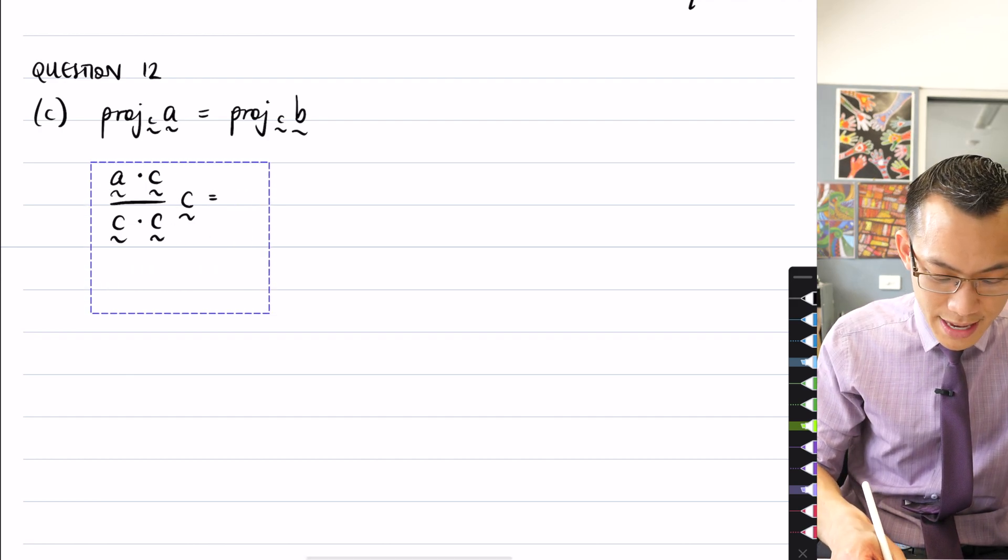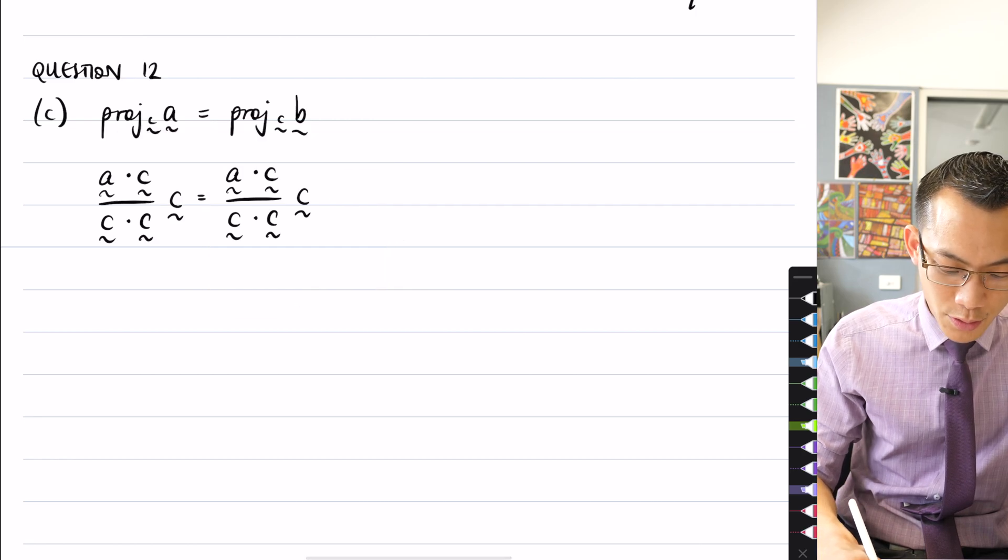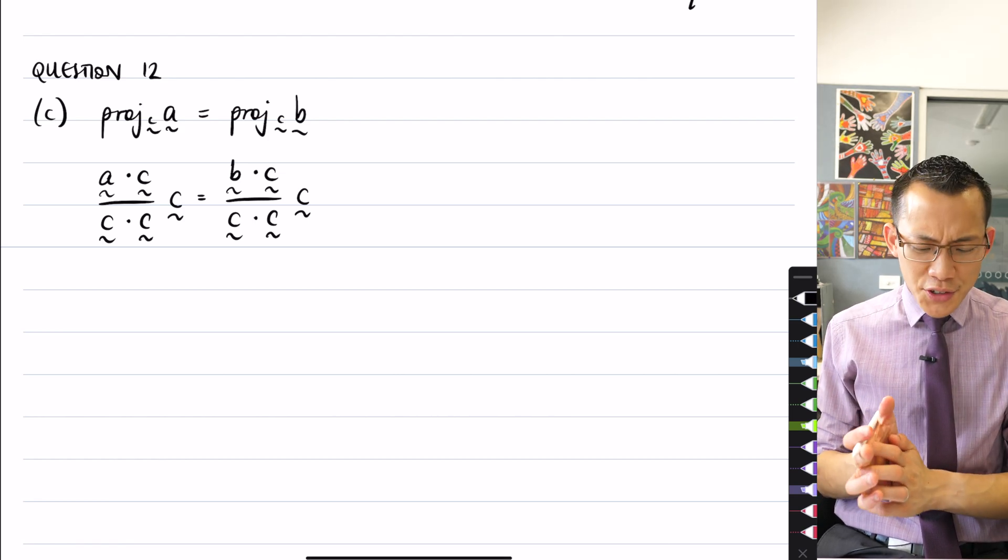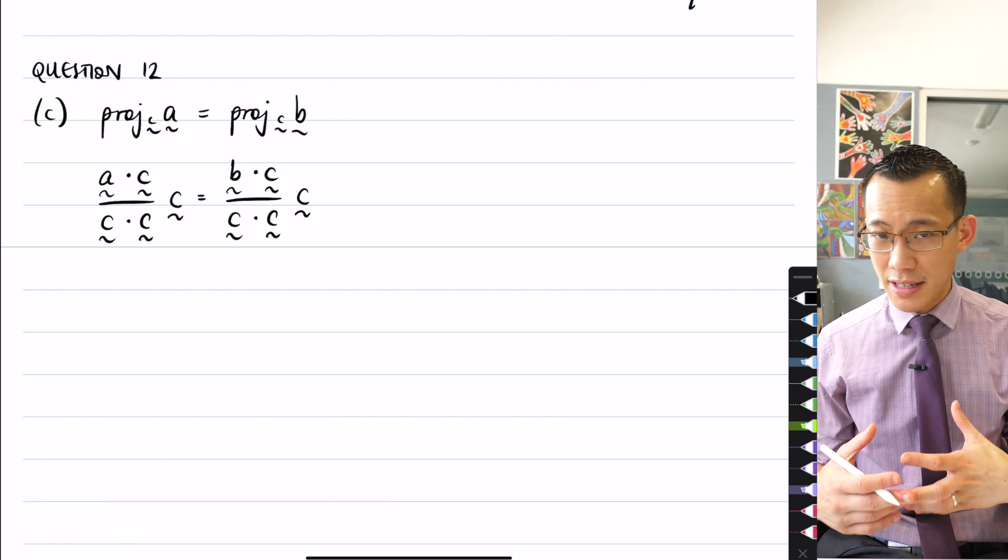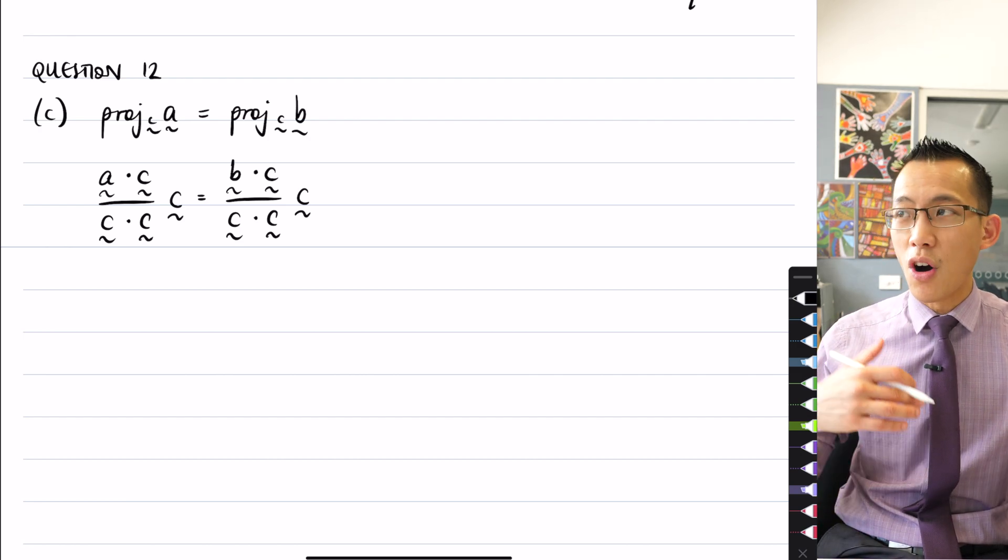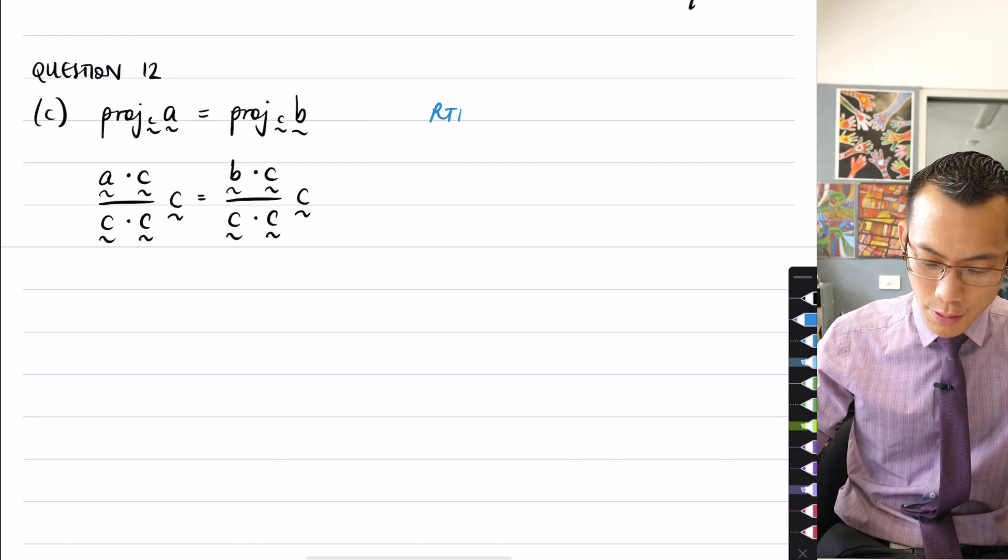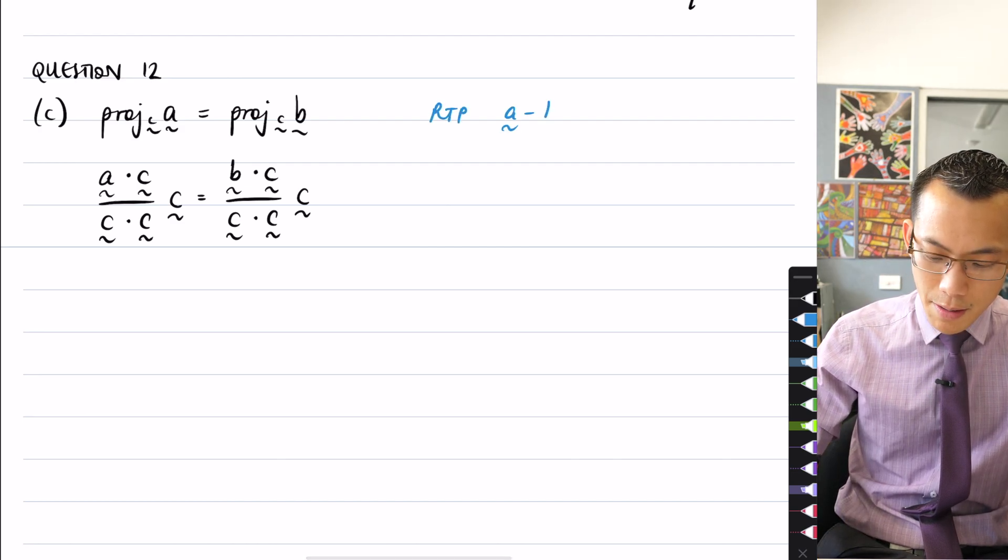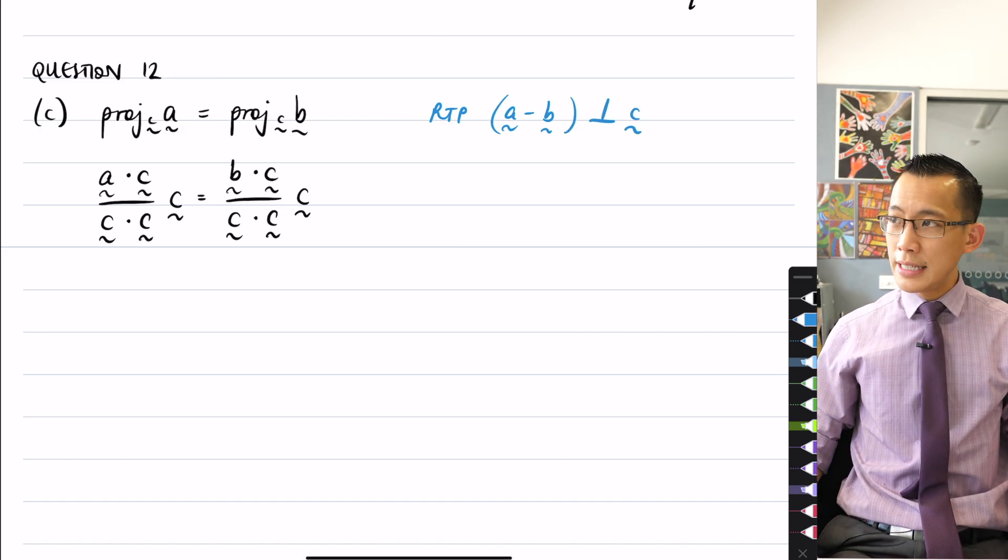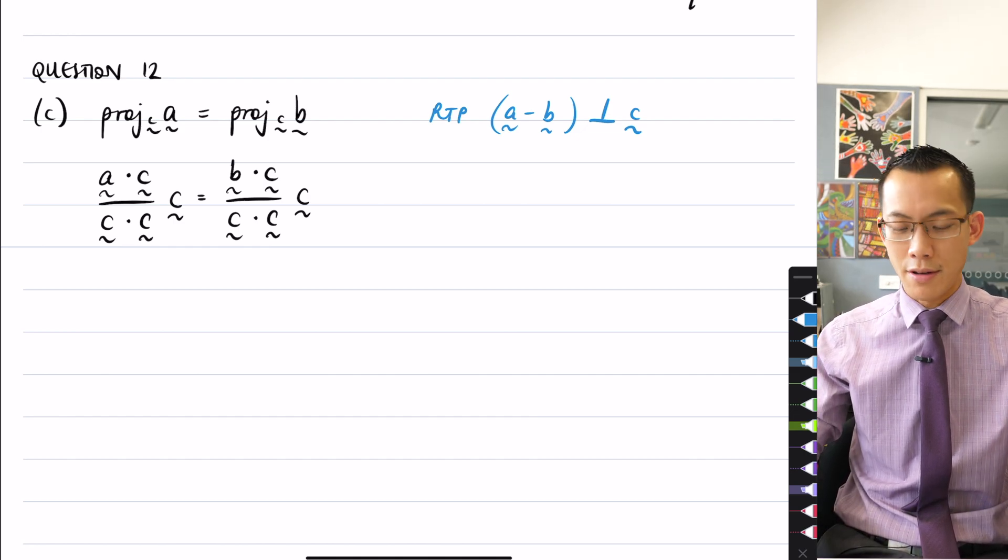And then on the right-hand side, everything is the same, except of course the vector that they're projecting on is not A, it's B. And what can you do with this? Well, there's lots of bits and pieces here that you can cancel out, and some of which you don't want to. So remembering that the goal I'm heading towards is that, what I'm required to prove, is that A minus B, that that is perpendicular to C. So clearly, the way that you would show things are perpendicular to one another is by the dot product being equal to zero.